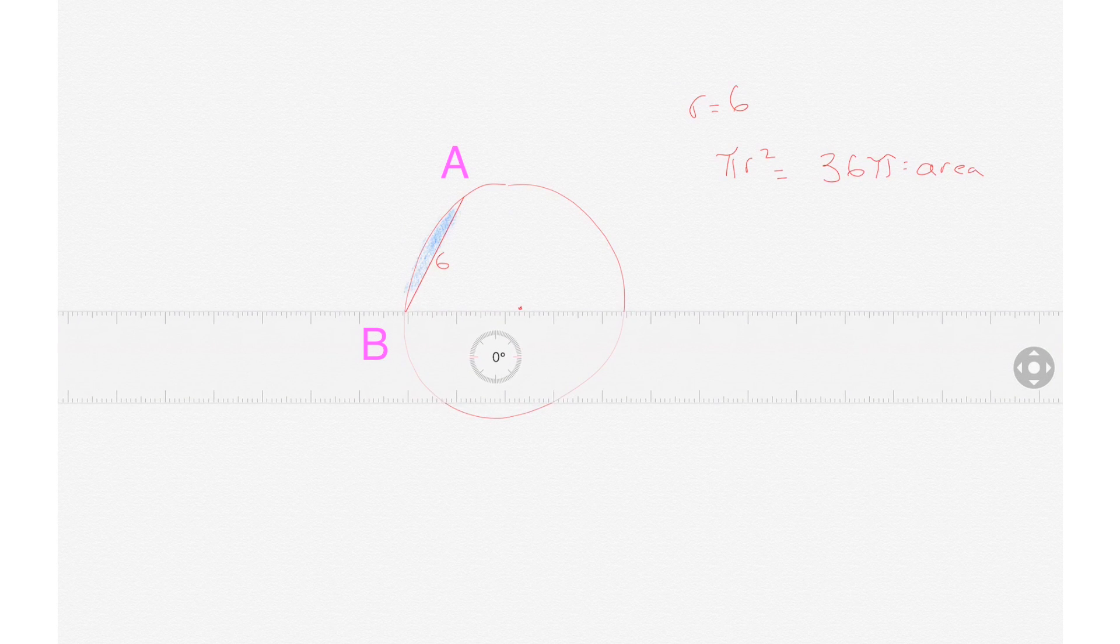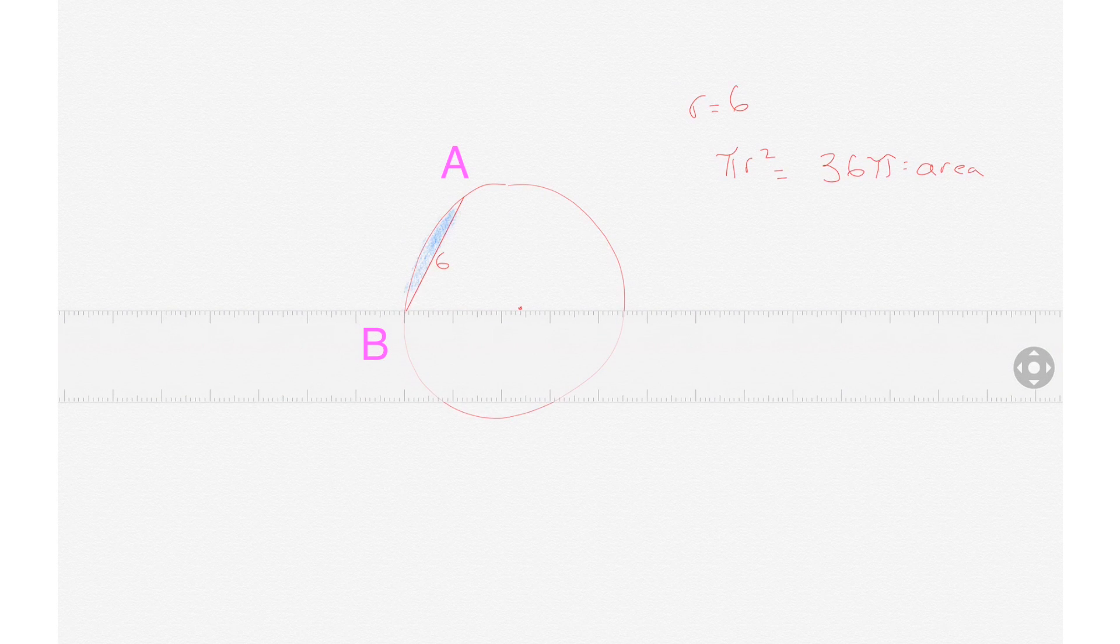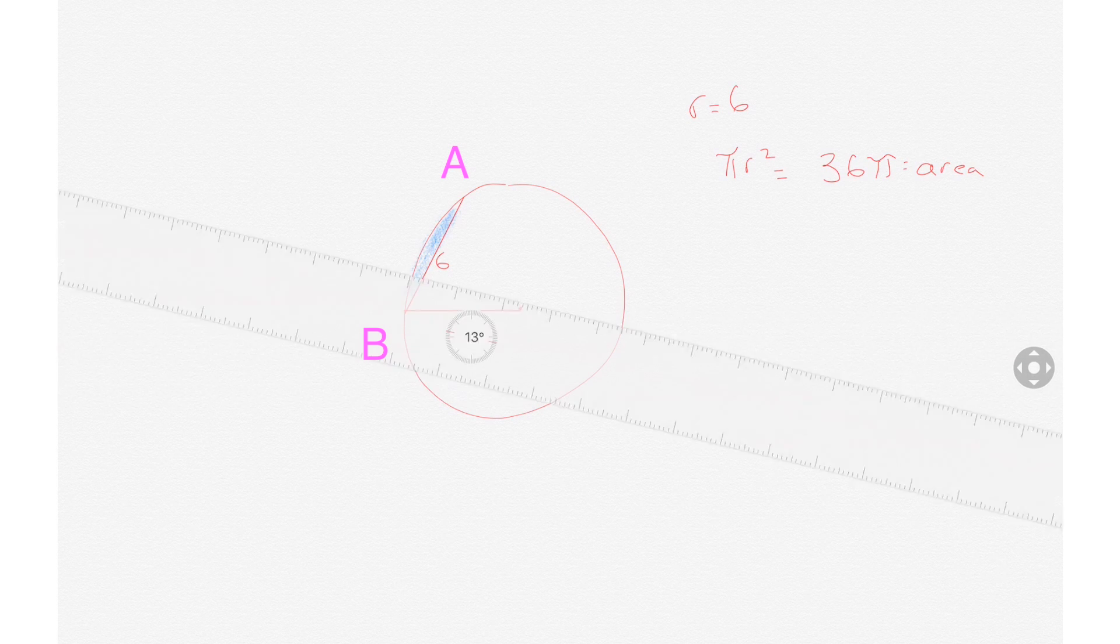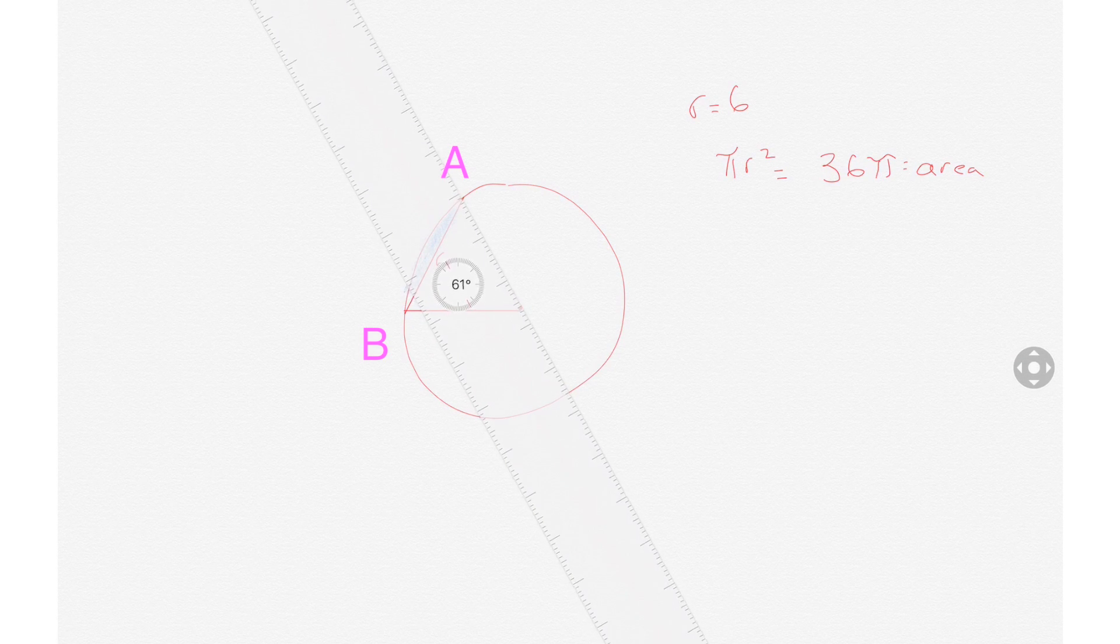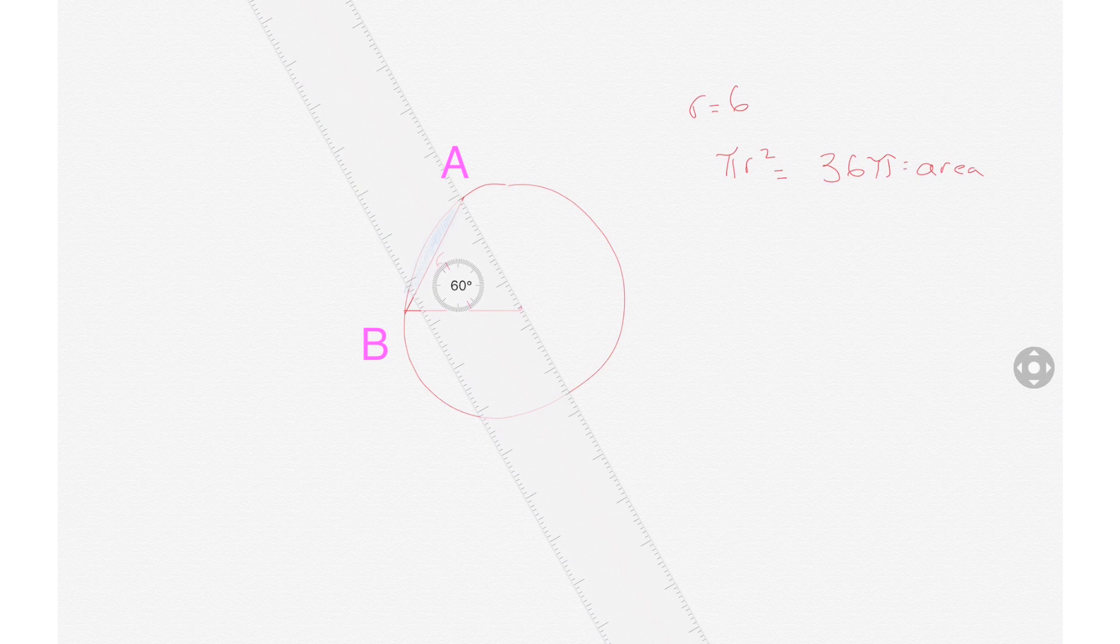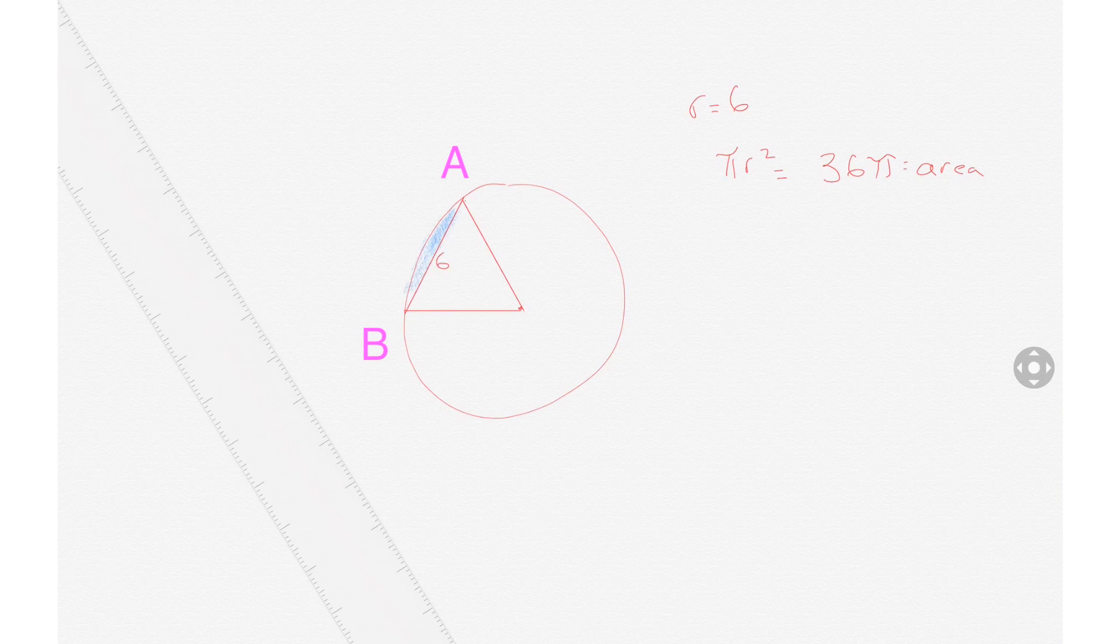The radius is 6, and A to B is also 6, and since the radius is 6, you can go from the origin of the circle to the first point of that line, and that would be 6.